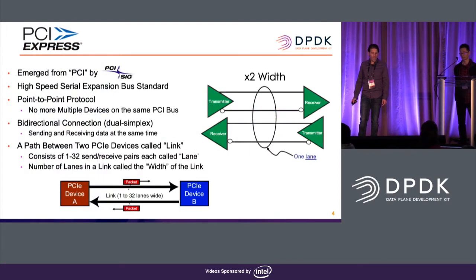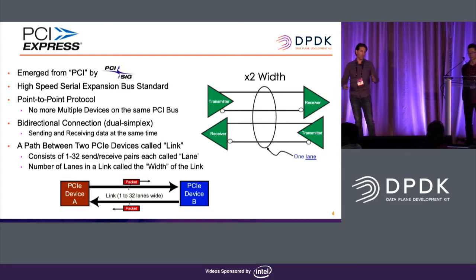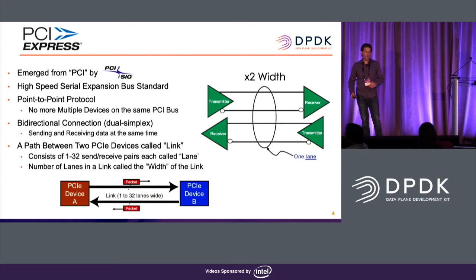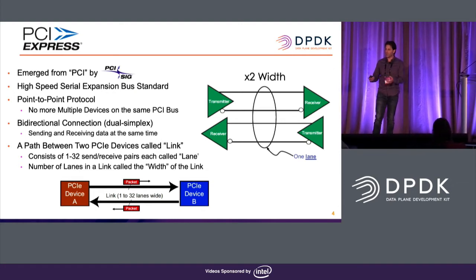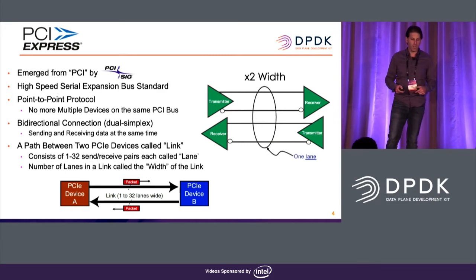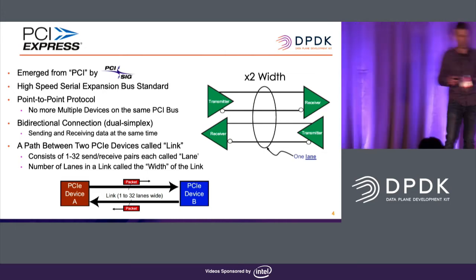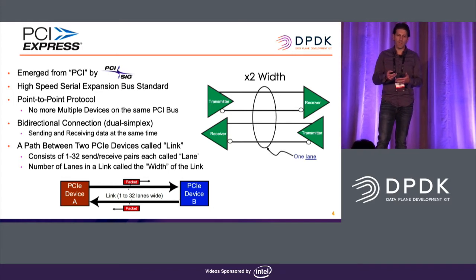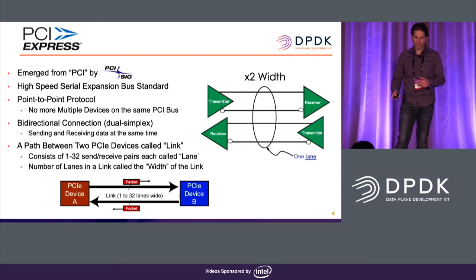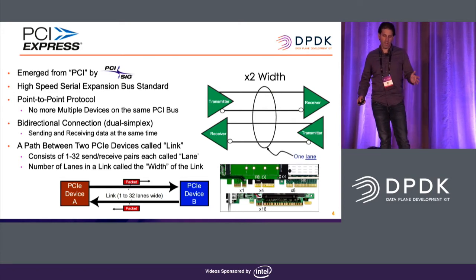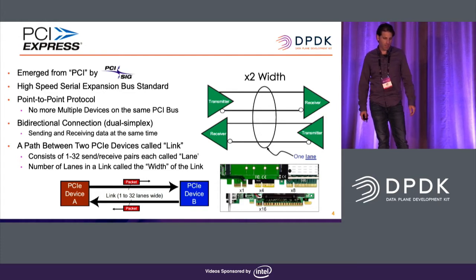PCIe Express emerged from PCI in the 90s, starting from 2000 via the PCIe SIG. The main changes are higher speed and point-to-point protocol — each PCI device can talk directly. It's a bidirectional, full-duplex connection. Bandwidth is determined by the number of lanes. For example, a x2 PCIe has four lanes — two transmit and two receive. Physical slots come in x1, x4, x8, and x16 widths.